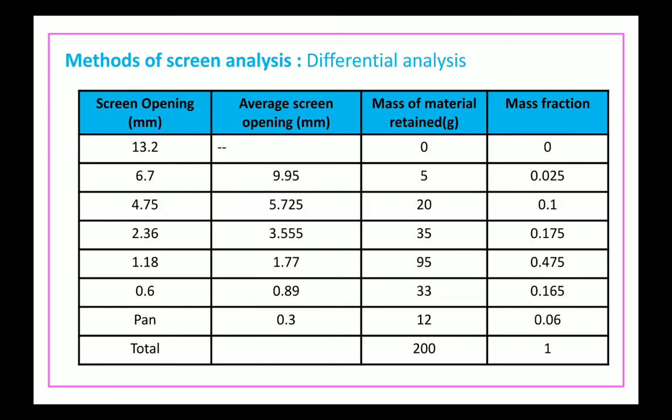Here, certain values have been entered into the differential analysis template. The first column represents screen opening, the second column represents average screen opening, then mass of material retained, and mass fraction. For example, the average screen opening for the second screen of 9.95 is obtained as 13.2 plus 6.7 divided by 2. Likewise, 5.725 is obtained as 6.7 plus 4.75 divided by 2. The average screen opening for the pan is 0.6 plus 0 divided by 2, giving 0.3. The material retained on each screen is measured and the mass fraction is calculated.